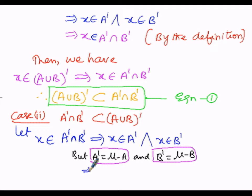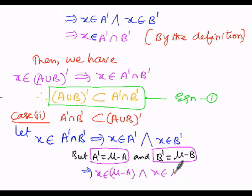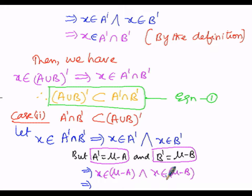The next logical step: x belongs to A', which can be written as μ minus A, and x belongs to B', which can be written as μ minus B. So x belongs to μ minus A means x is present in μ but not in A. Similarly, x belongs to μ but x does not belong to B, because B is removed.